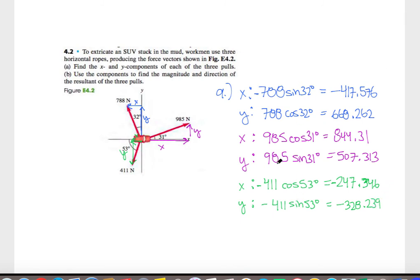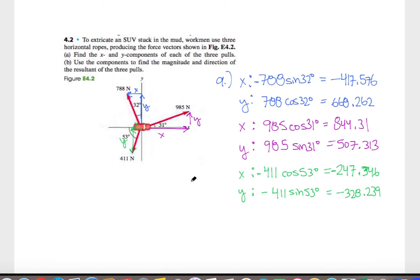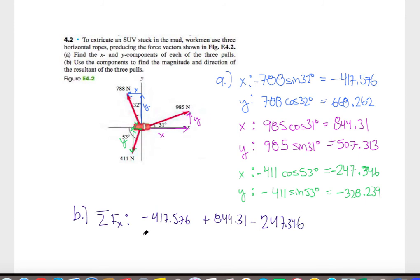The key here is to get your trig correct and then use common sense to apply a positive or negative sign where needed. For part B, we want the resultant force by adding all components. Adding up all the x forces: negative 417.576, plus 844.31, minus 247.346 gives a net force in the x direction of 179.388 newtons.